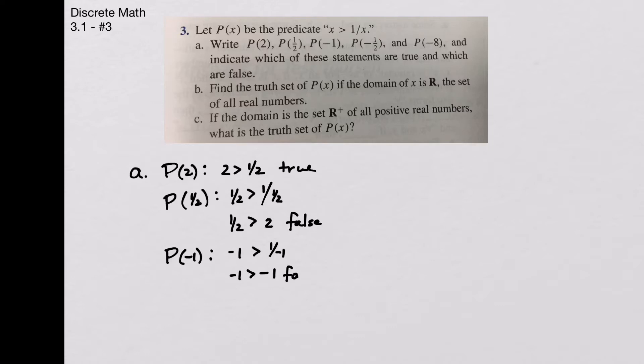And we have next, P(-1/2), which says that -1/2 is greater than 1 over -1/2, and that simplifies to -1/2 is greater than -2, which is true.